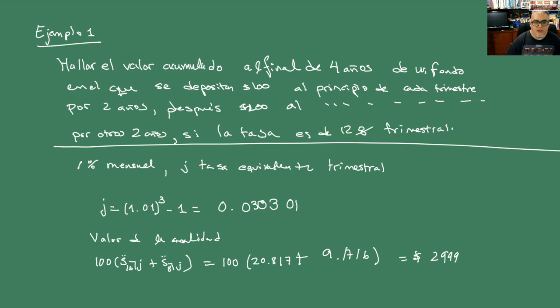Entonces básicamente calculamos la tasa real que se está pagando y a partir de esa nueva tasa calculamos la anualidad. Vamos a ver otro ejemplo de este, de esta misma metodología. Ejemplo 2.